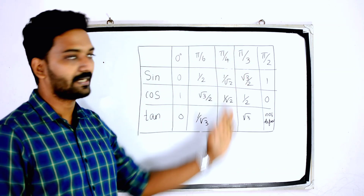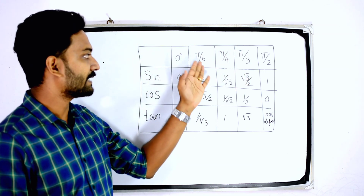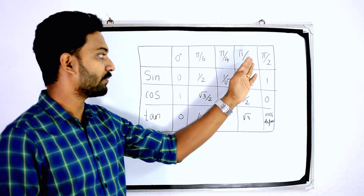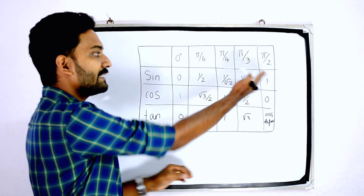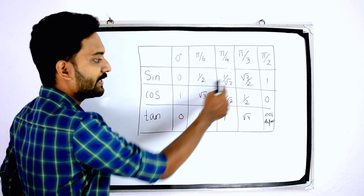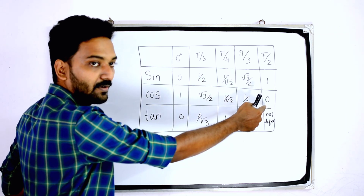The trigonometry table: sin 0° = 0, sin 30° = 1/2, sin 45° = 1/√2, sin 60° = √3/2, sin 90° = 1. Then for cosine: cos 0° = 1, cos 30° = √3/2, cos 45° = 1/√2, cos 60° = 1/2, cos 90° = 0.